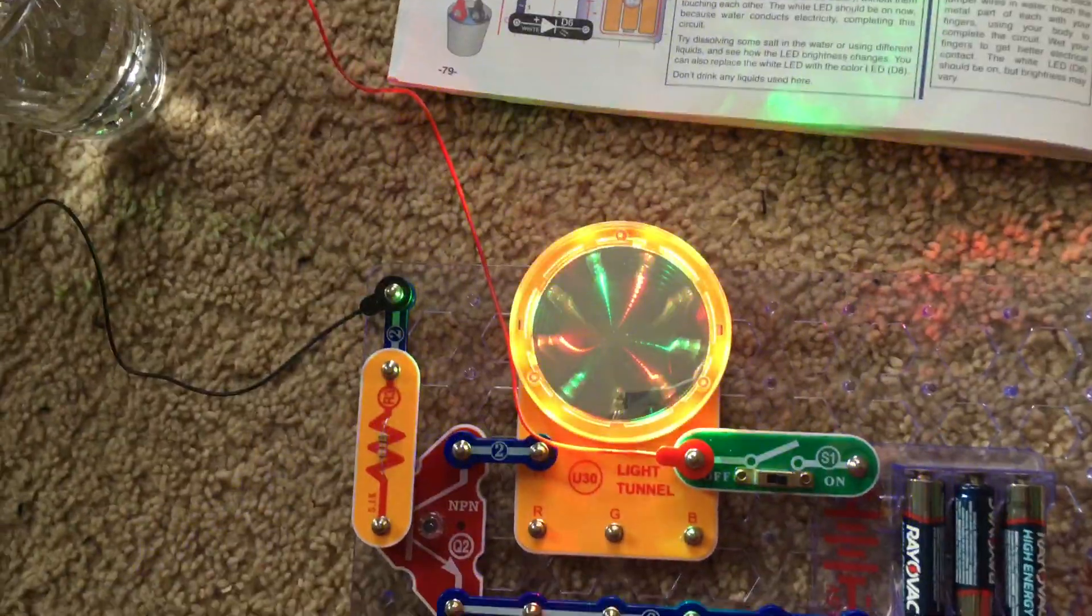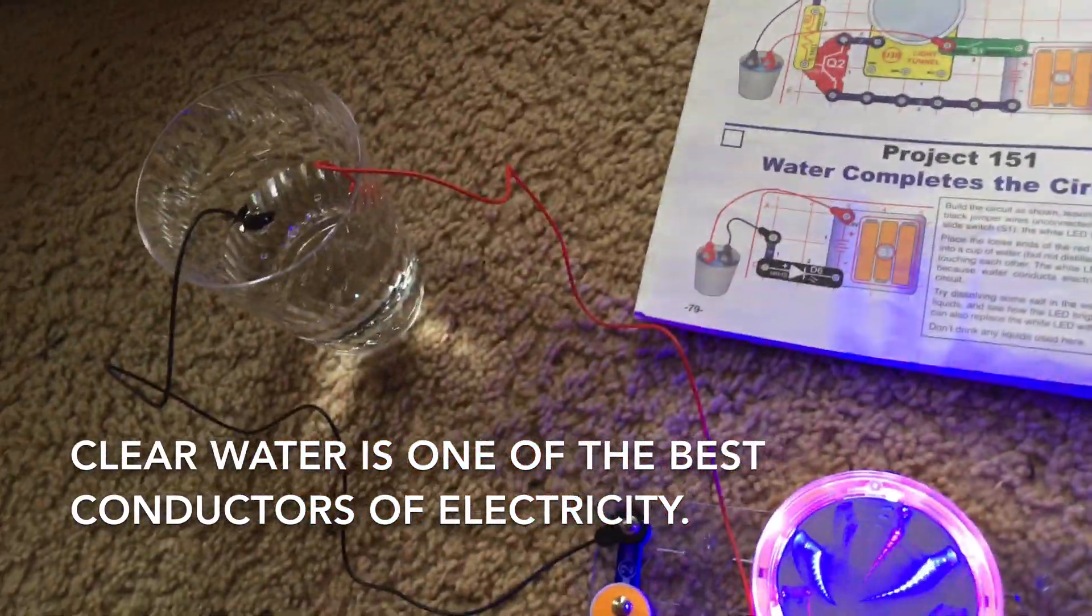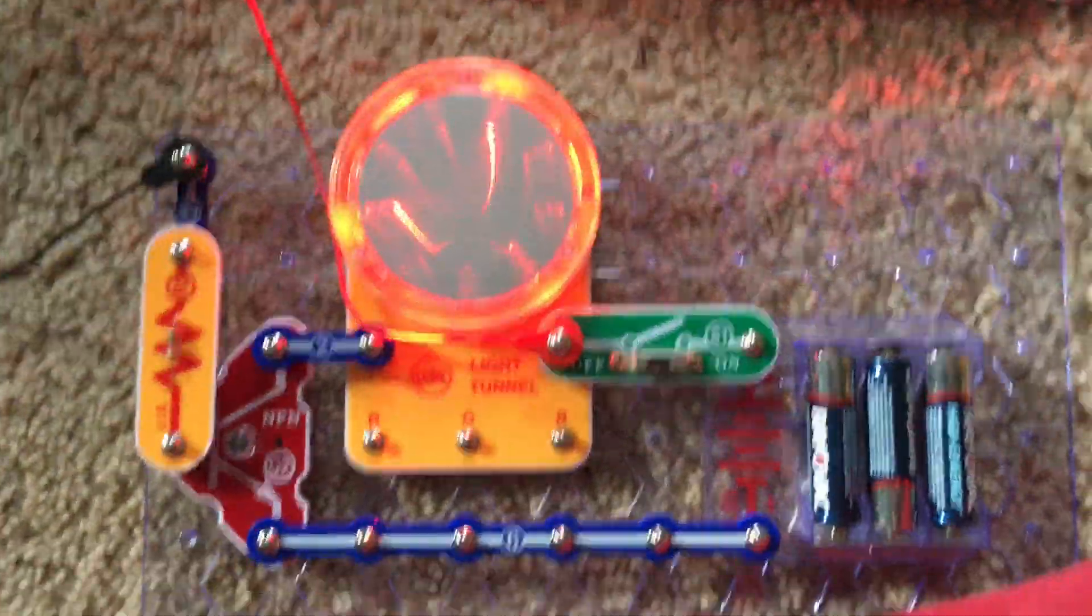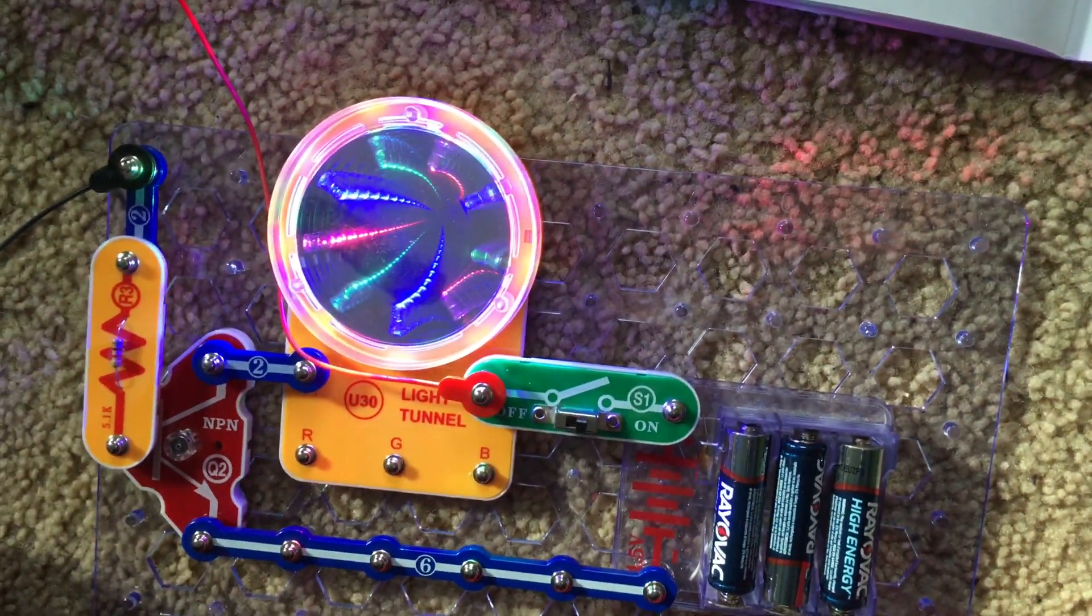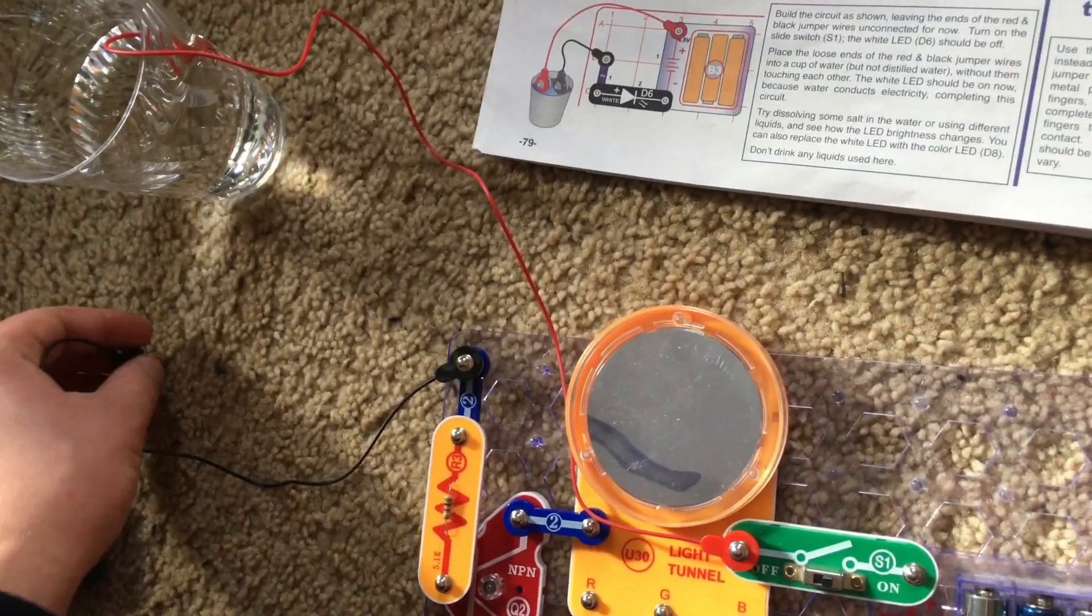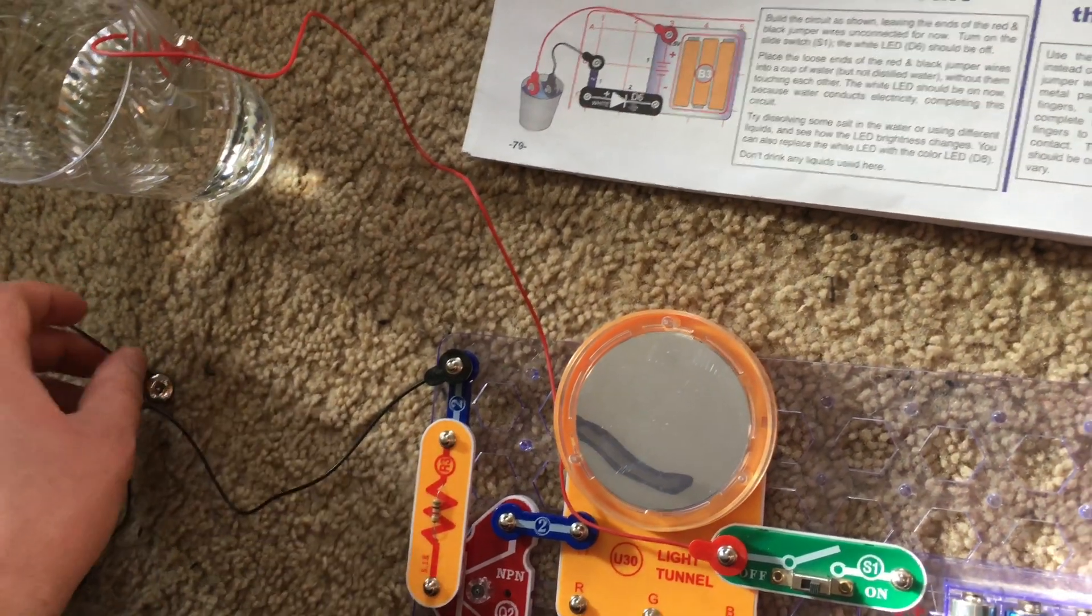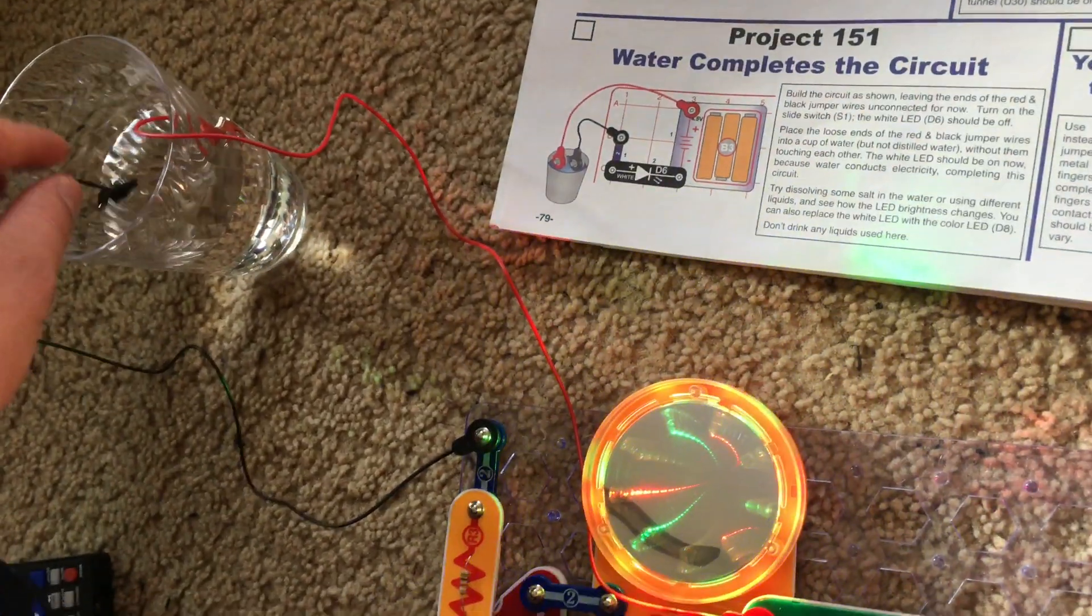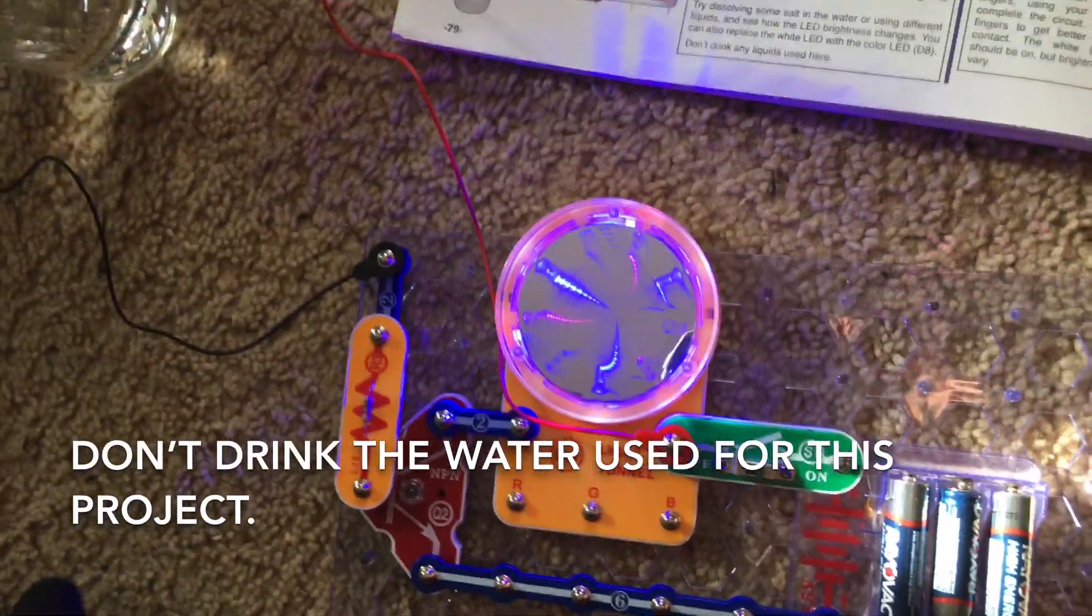It works just as it would if the jumper wires were directly connected, even though they're not, and that's because water conducts electricity. Water is one of the best conductors of current. Now if we remove one or both of the jumper wires from the water, the circuit will turn off because that electrical circuit is now broken. Put it back in, and the light tunnel comes back on. Now they say not to drink any water used in this project, which makes sense.